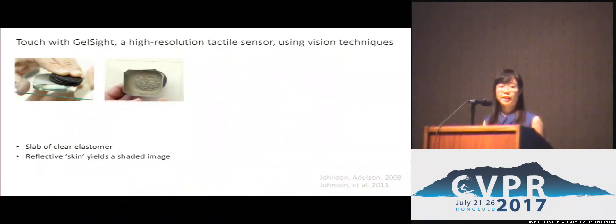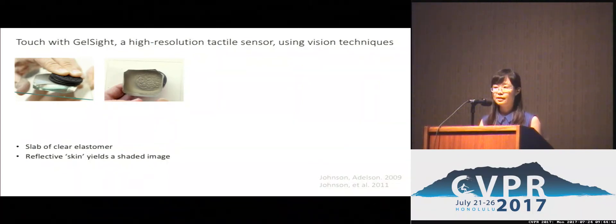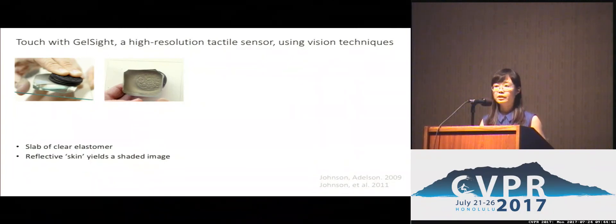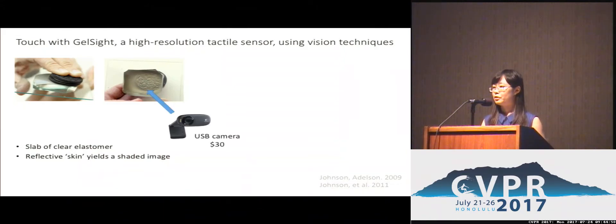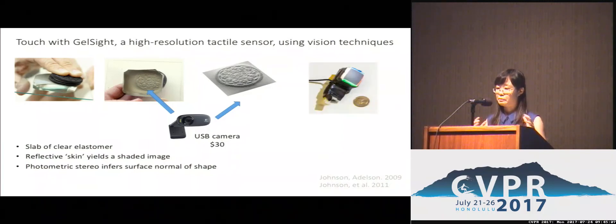One question is how we get the touch signals. In this project, we use a high-resolution tactile sensor called GelSight, which leverages techniques from computer vision. The central part is a piece of clear elastomer with a reflective membrane on top. When the elastomer contacts a surface, it deforms, and the reflective membrane creates special shadings. We pose a camera on the other side to capture these shadings, then reconstruct the 3D structure using photometric stereo. Everything — the elastomer, camera, and illuminations — is packaged into a small tactile sensor called GelSight.